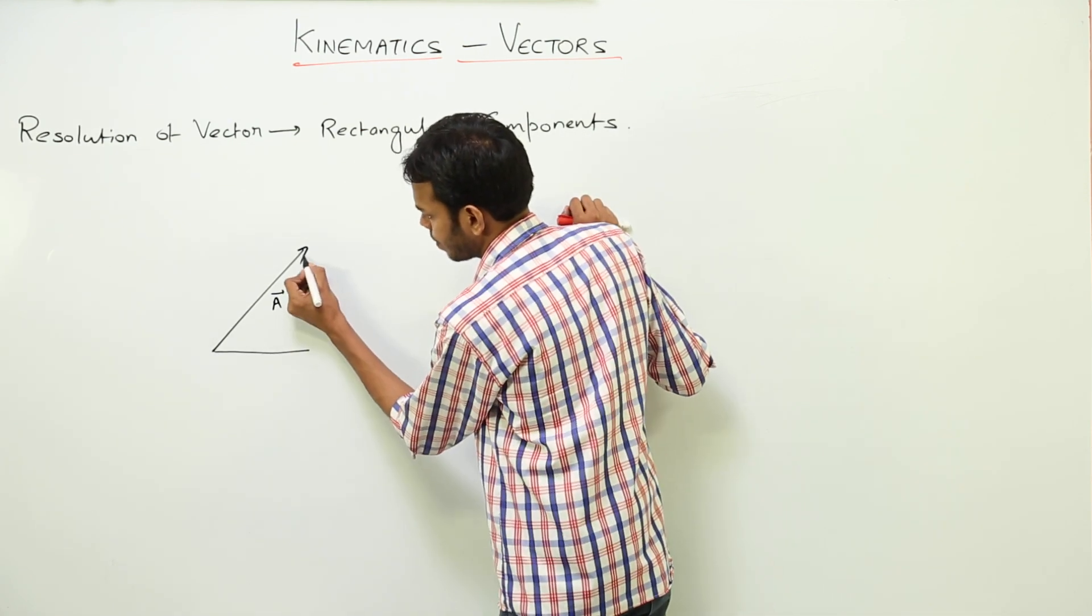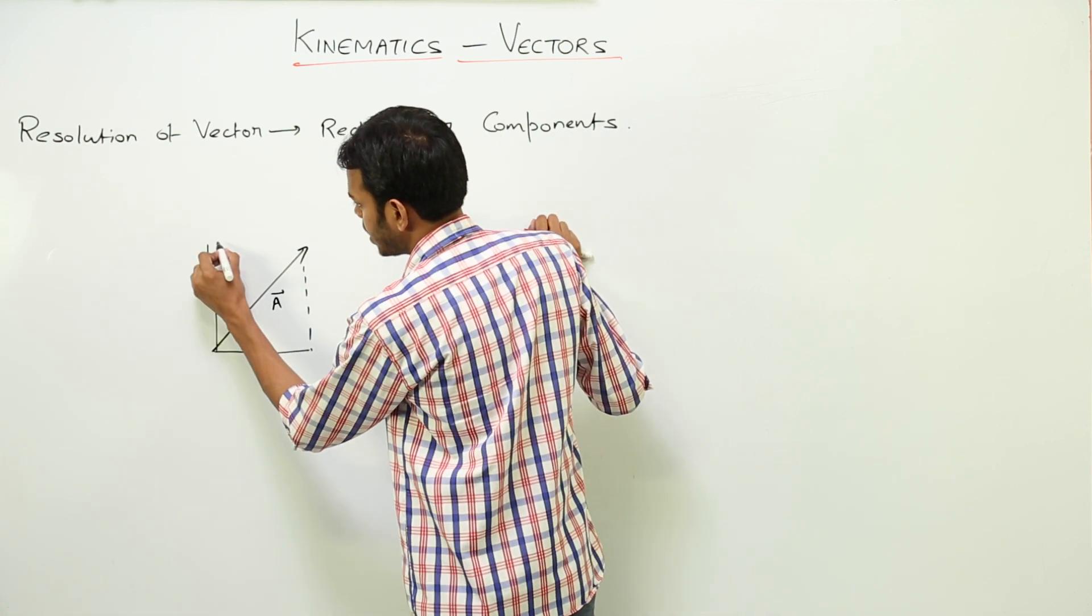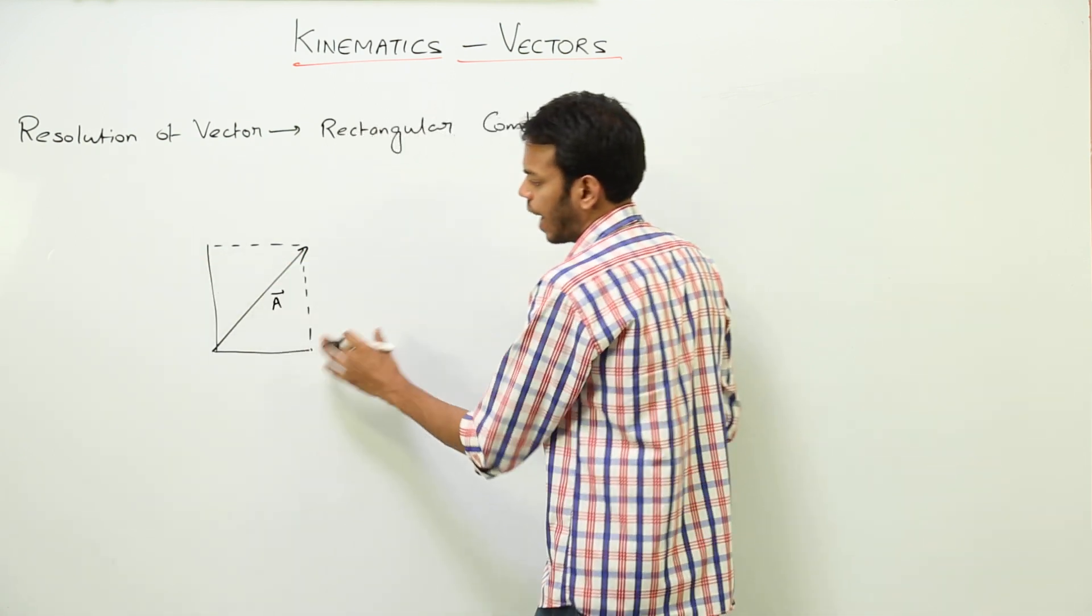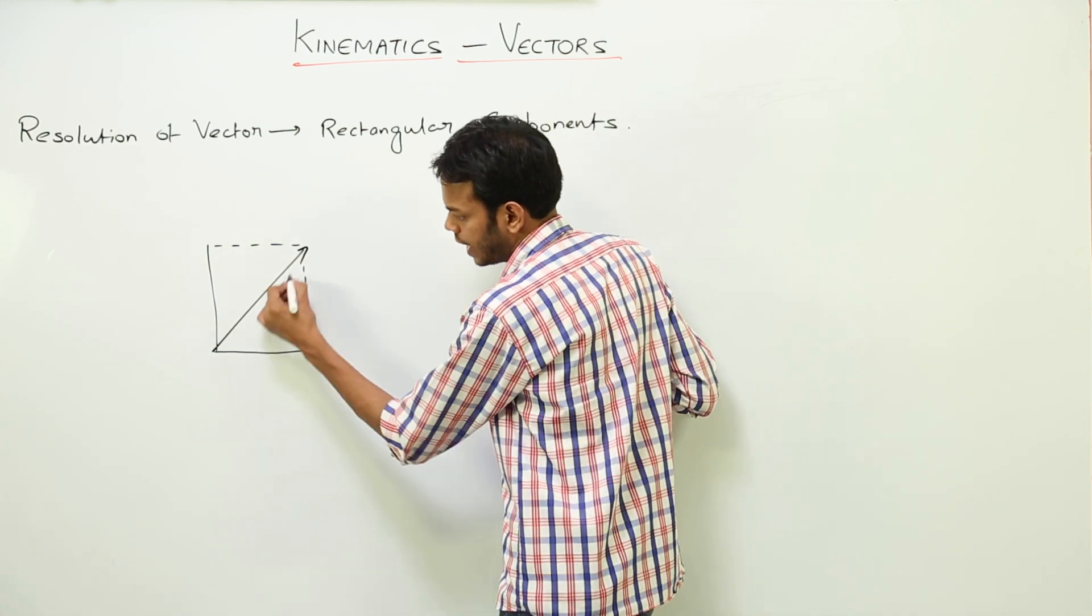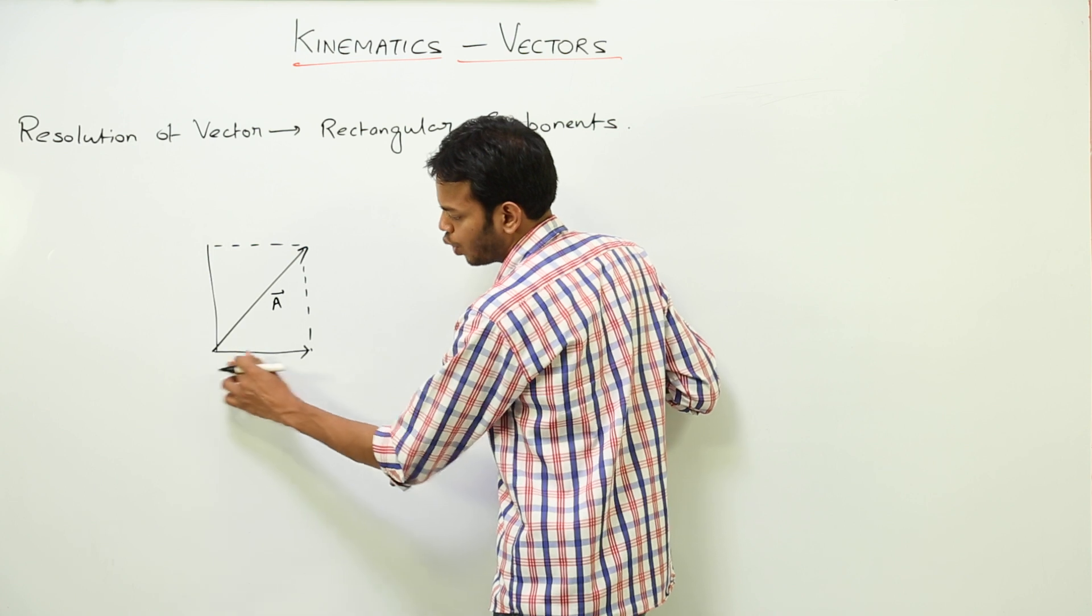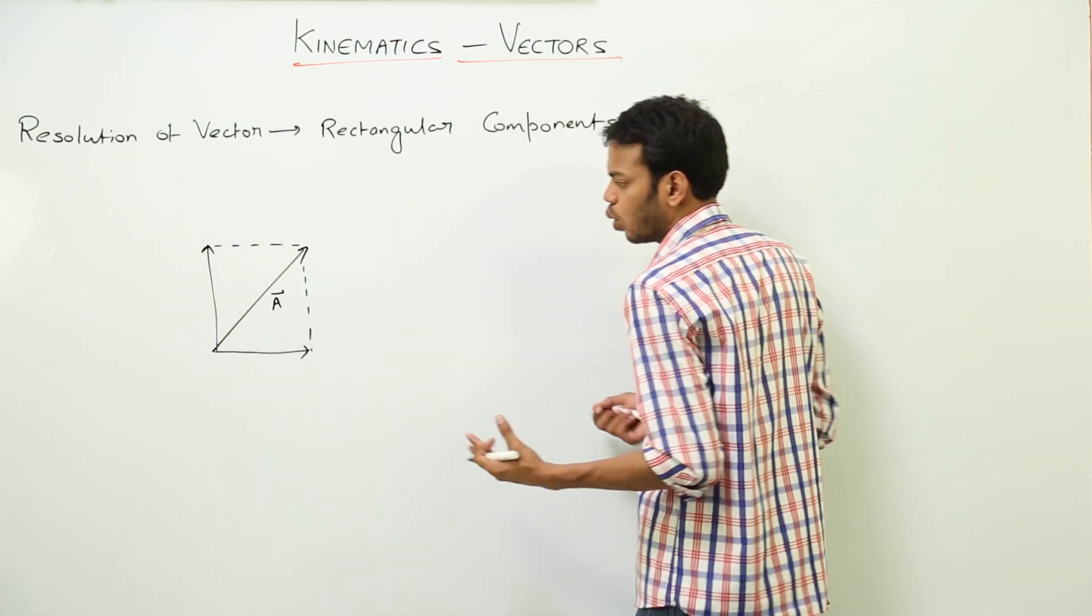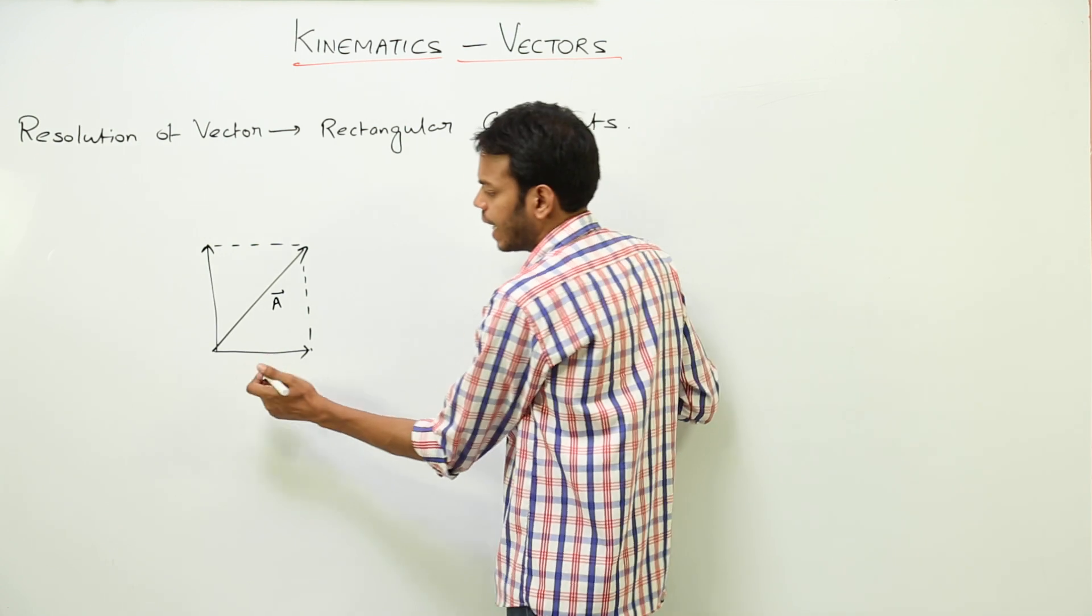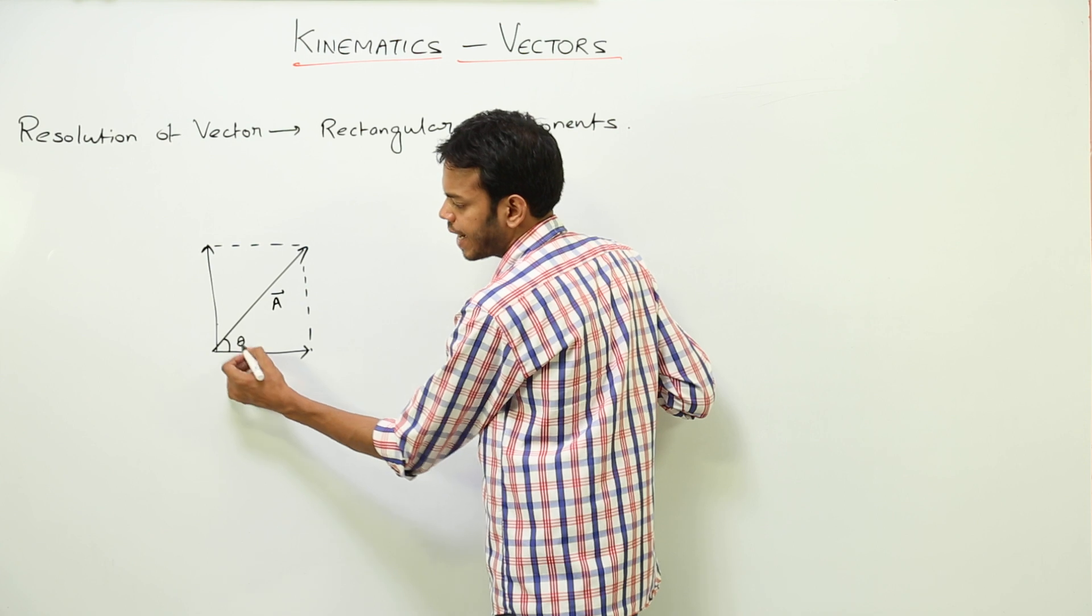So we have just - the basic purpose of this thing is I want this vector A to be resolved into one this vector and another this vector. So how would I know what is this vector? Let's do one thing: consider this angle be theta. Since this and this is at 90 degrees, this angle would be 90 minus theta.